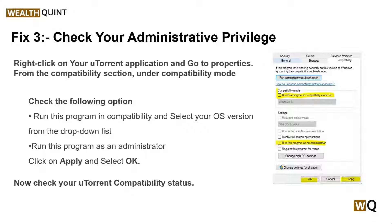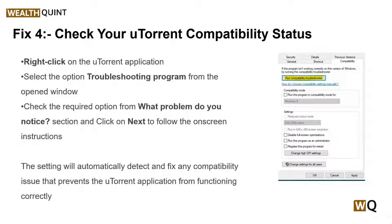Solution 4: check your uTorrent compatibility status. Even after enabling the compatibility option from the Properties window, you may need to troubleshoot manually. Right-click on the uTorrent application and select Troubleshoot Compatibility from the opened window. Check the required options under 'What problem do you notice?' and click Next to follow the on-screen instructions. This setting will automatically detect and fix any compatibility issue that prevents uTorrent from functioning correctly.